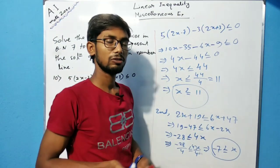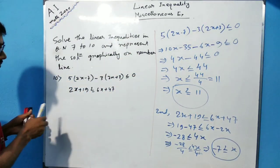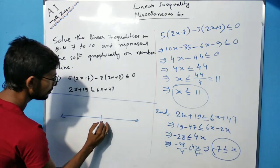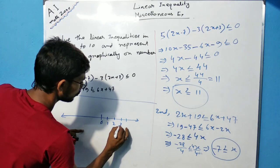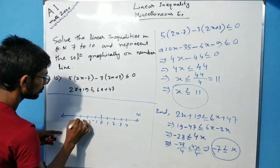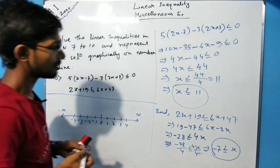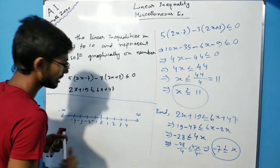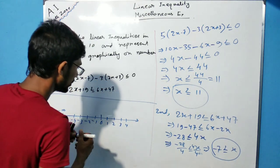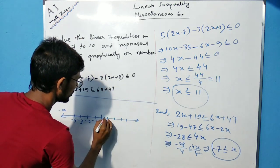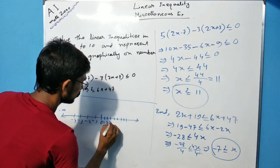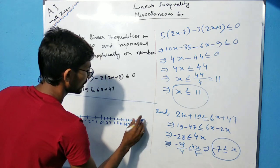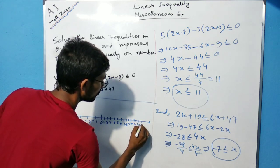Now we will represent this solution on a number line. Drawing the number line: 0, then 1, 2, 3, 4, 5, 6, 7, 8, 9, 10, 11, 12, 13 and up to infinity on the right; minus 1, minus 2, minus 3, minus 4 and up to minus infinity on the left. For the first condition, x is less than or equals to 11, so we shade from 11 towards the left.